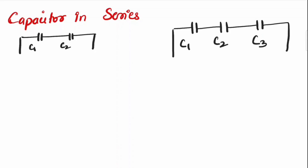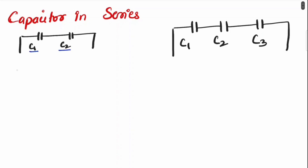So let's begin with capacitor in series. The first example is, let's say I have two capacitors C1 and C2. The formula for capacitor in series is exactly same as resistance in parallel. So 1 upon CT equals 1 upon C1 plus 1 upon C2.